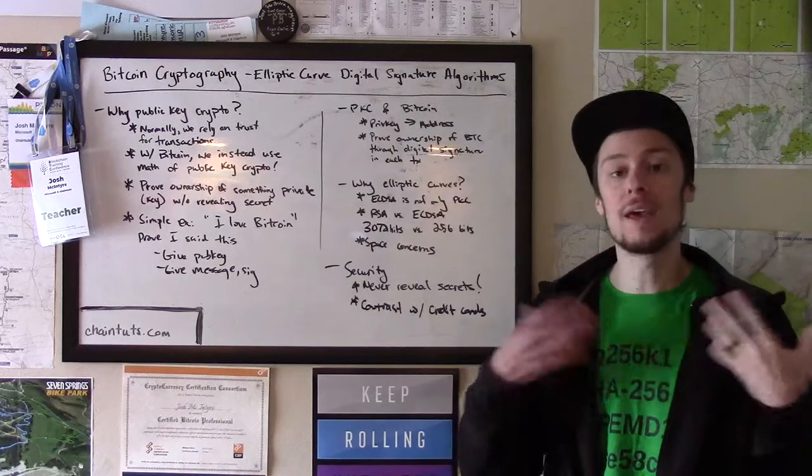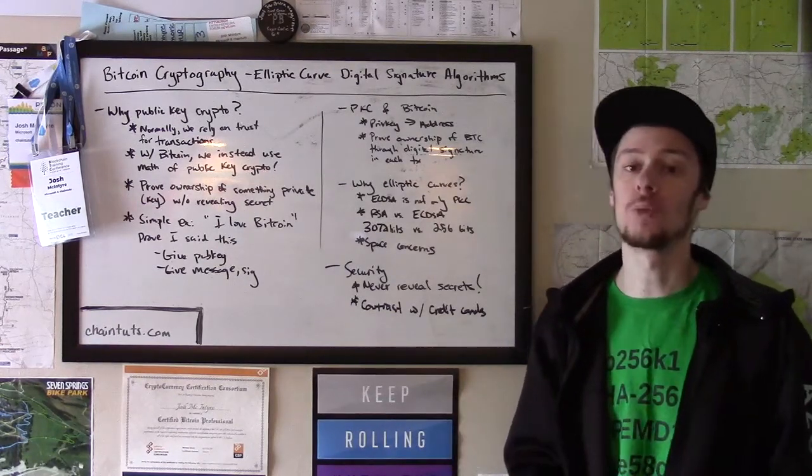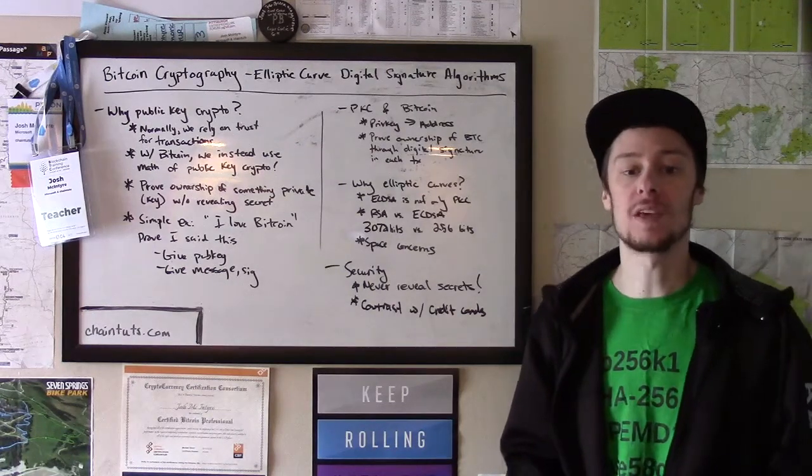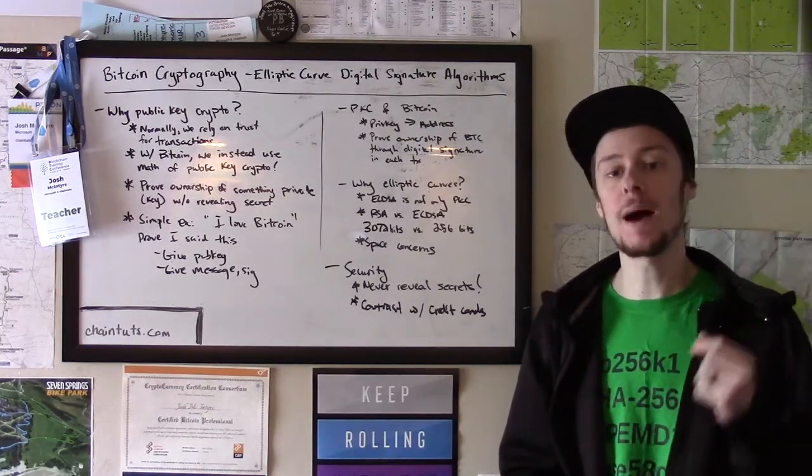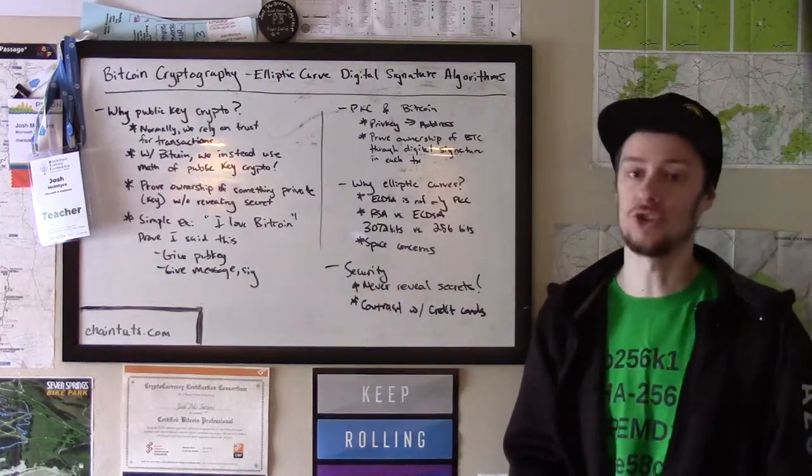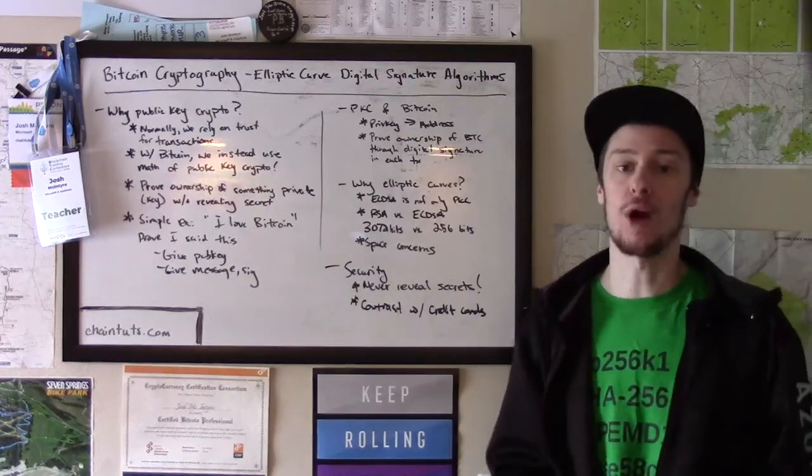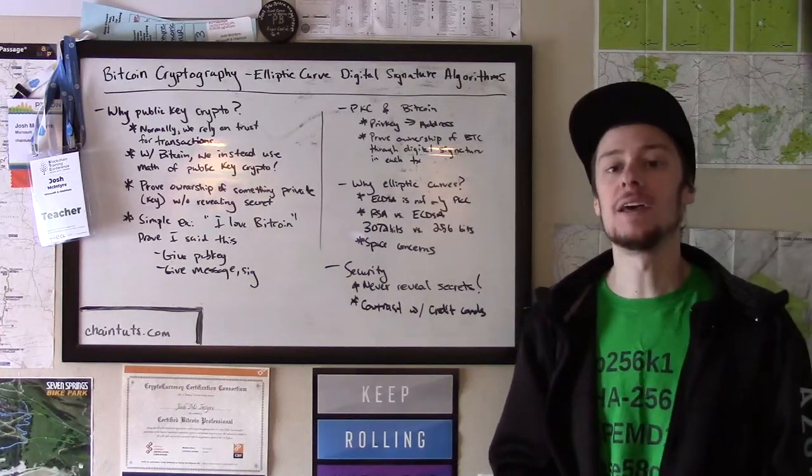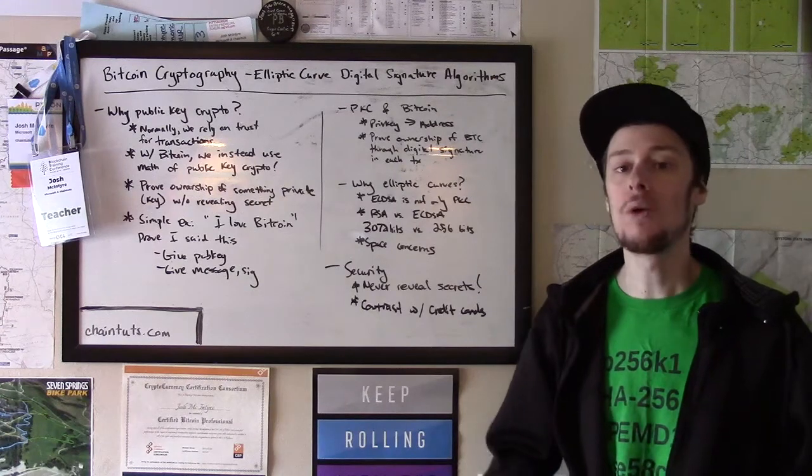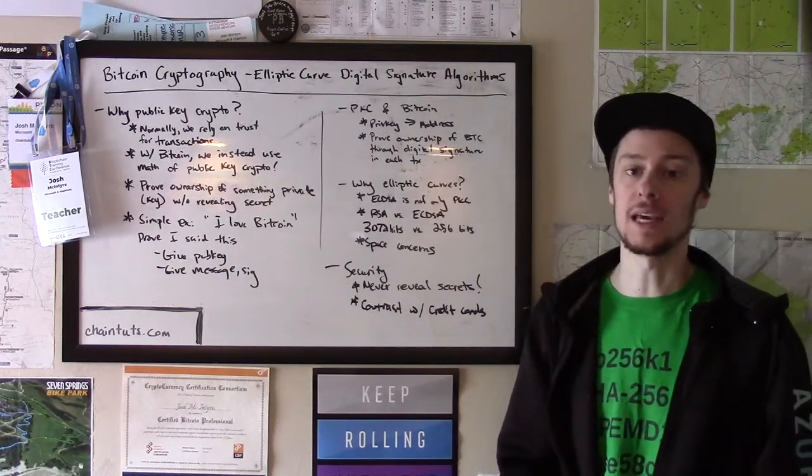But you've now given everyone this message and this digital signature with your public key. Now what anyone in the world can do with this information is provably mathematically verify that you have signed this message "I love Bitcoin" with your private key. What you have essentially done is proven that you are the rightful owner of the secret key without revealing what the secret key is.